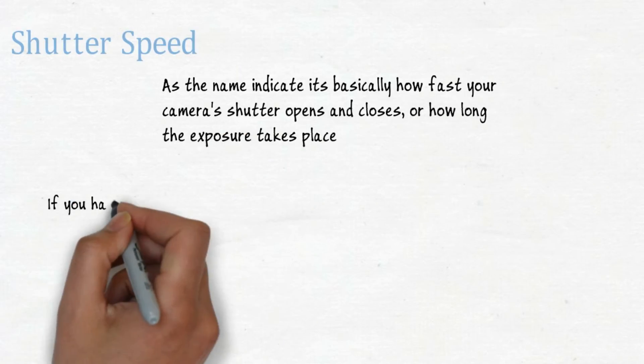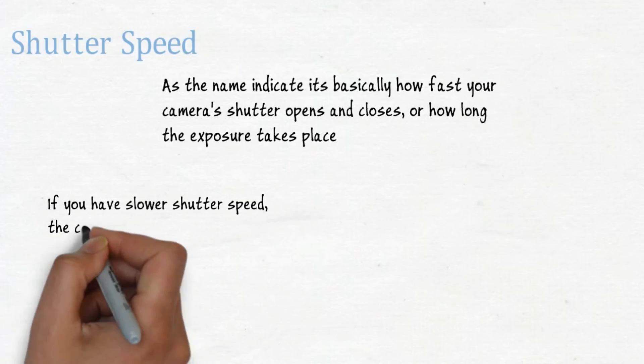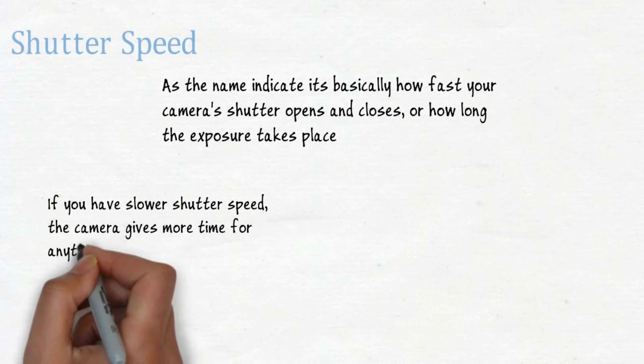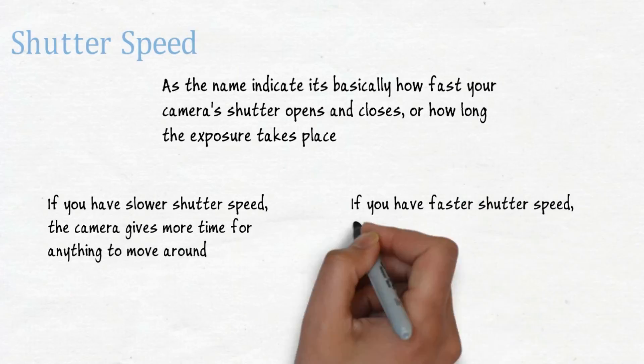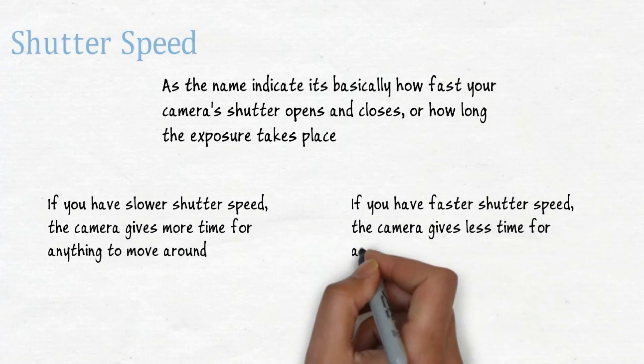When you have slower shutter speed, the camera gives more time for anything to move around. And when you have faster shutter speed, the camera gives less time for anything to move around.